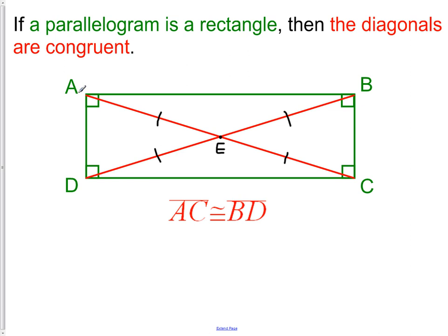So not only are the diagonals congruent to each other, let's call them the half diagonals, or from a vertex to the center of the rectangle, are also all congruent to each other. And this part we knew from the properties of a parallelogram that we learned a couple days ago.